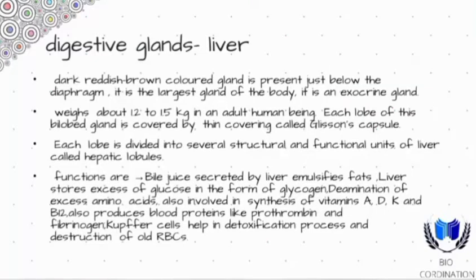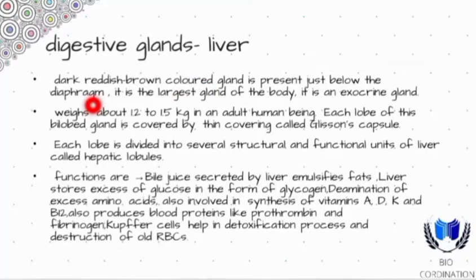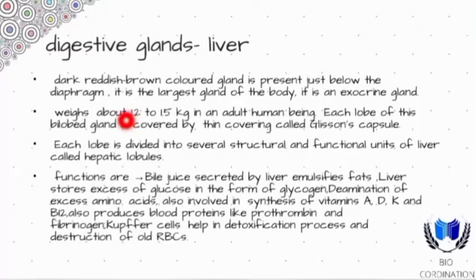The liver is a dark reddish-brown colored gland. It is present just below the diaphragm. It is the largest gland and it is an exocrine gland, which means whatever secretion it produces is through a duct.